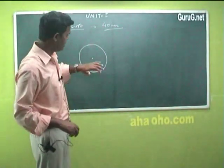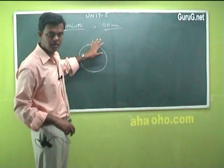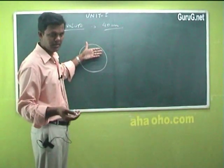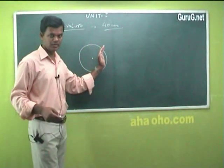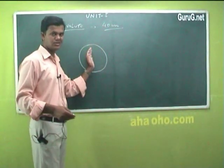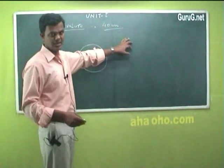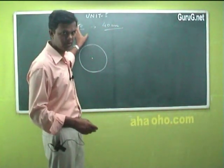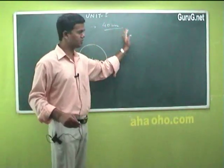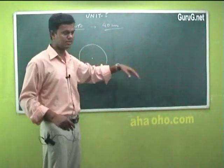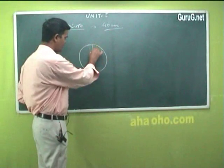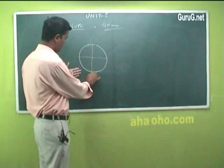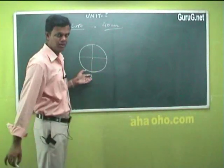Basically what you do is divide this circle into any equal number of points, say as per your convenience. If you take more number of divisions, the curve will be smooth — as I said for the previous cycloid construction, more points give a smoother curve. So I will divide it into 12 equal parts. This starting point I will take as point A.